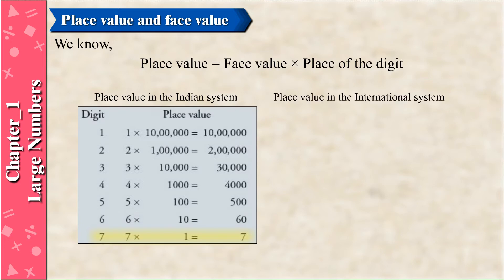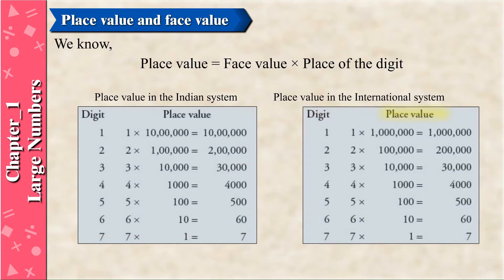Place value in the international system. Digit 1: 1 × 1 million = 1 million. Digit 2: 2 × 100,000 = 200,000. Digit 3: 3 × 10,000 = 30,000. Digit 4: 4 × 1,000 = 4,000. Digit 5: 5 × 100 = 500. Digit 6: 6 × 10 = 60. Digit 7: 7 × 1 = 7.